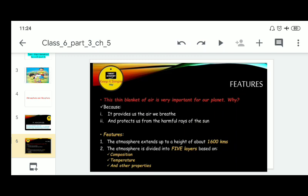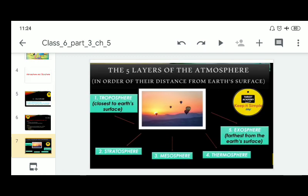It extends up to a height of about 1600 kilometers and it is divided into 5 layers based on composition, temperature and other properties. The 5 layers starting from the earth's surface are the troposphere, the stratosphere, the mesosphere, the thermosphere and the exosphere.